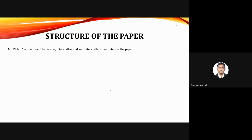What should be the structure of a research paper? First is the title — it should be concise, informative, and accurately reflect the content. Do not give a generic title; it should be specific to your study. Most journals insist on restricting the title to around 10 words — that is the optimal length. Based on my experience as an editor and reviewer, I often receive comments asking to reduce the title to 10 words. A short but meaningful and specific title is recommended.